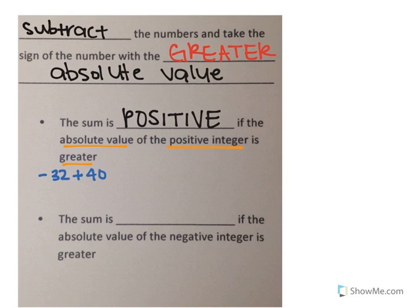Here's the first one: negative 32 plus 40. We have two integers with different signs, one negative and one positive. In order to solve this problem, we're going to subtract the numbers and take the sign of the number with the greater absolute value.